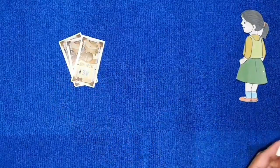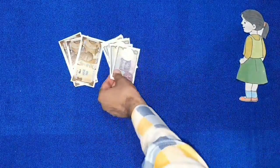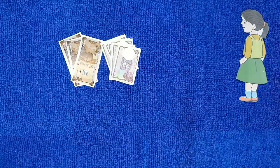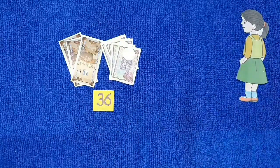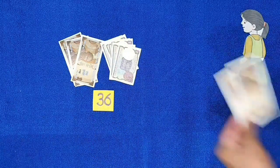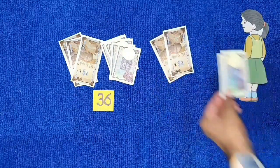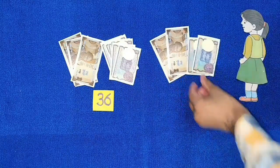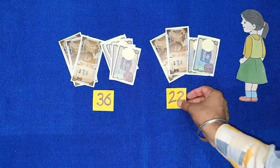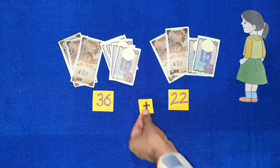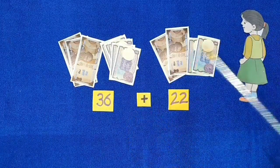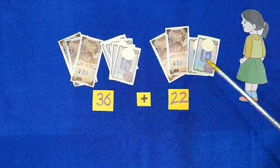This is Harman. She has 36 rupees — 3 ten-rupee notes and 6 one-rupee notes. Her father gave her 22 rupees: two notes of 10 rupees and two notes of 1 rupee. So we will count how much money Harman has now.